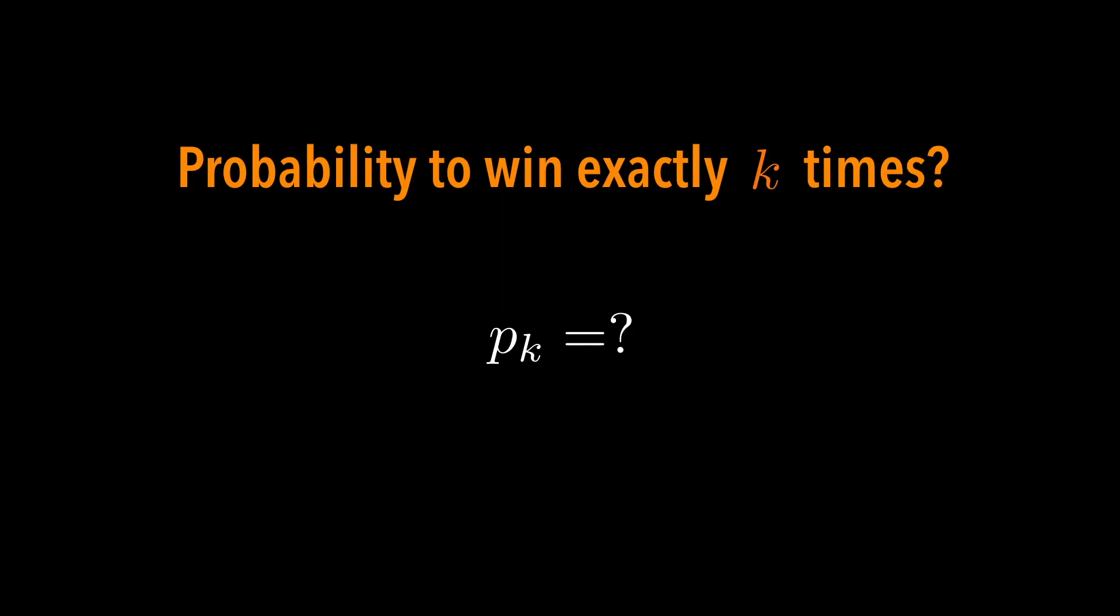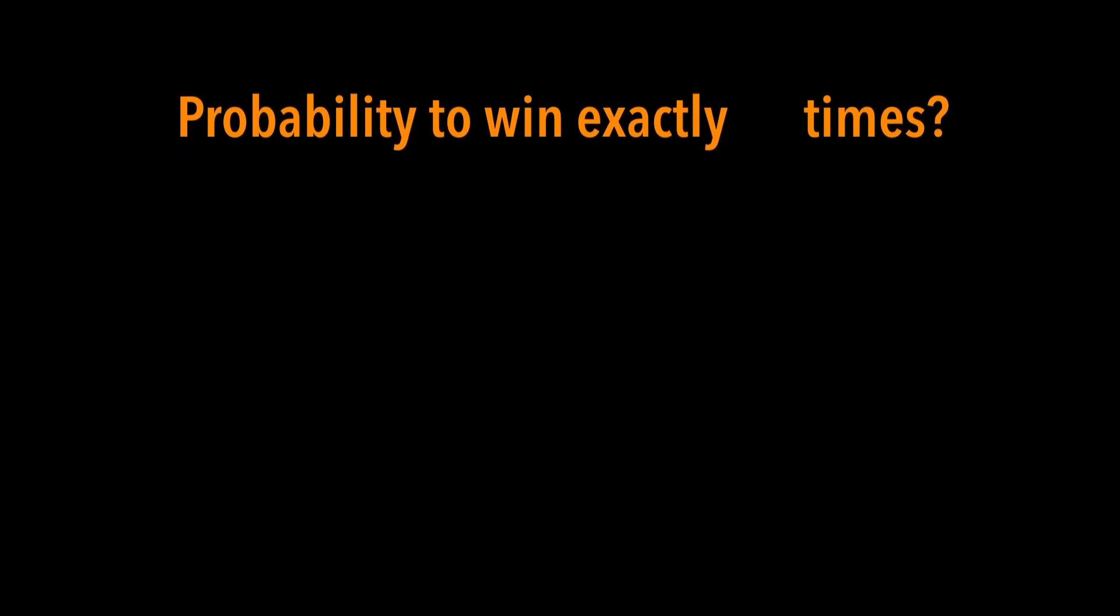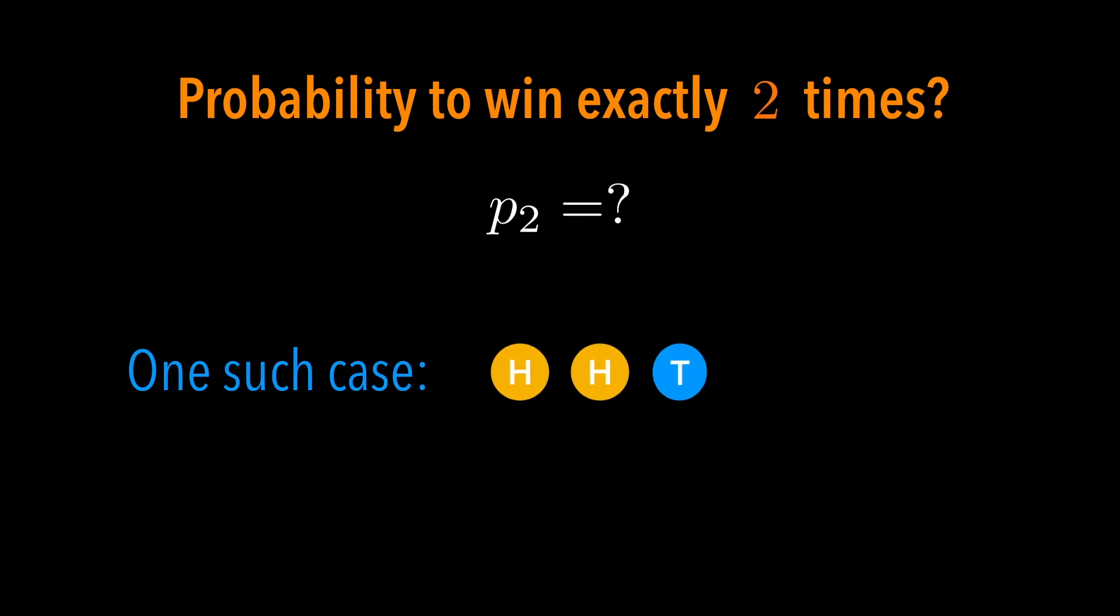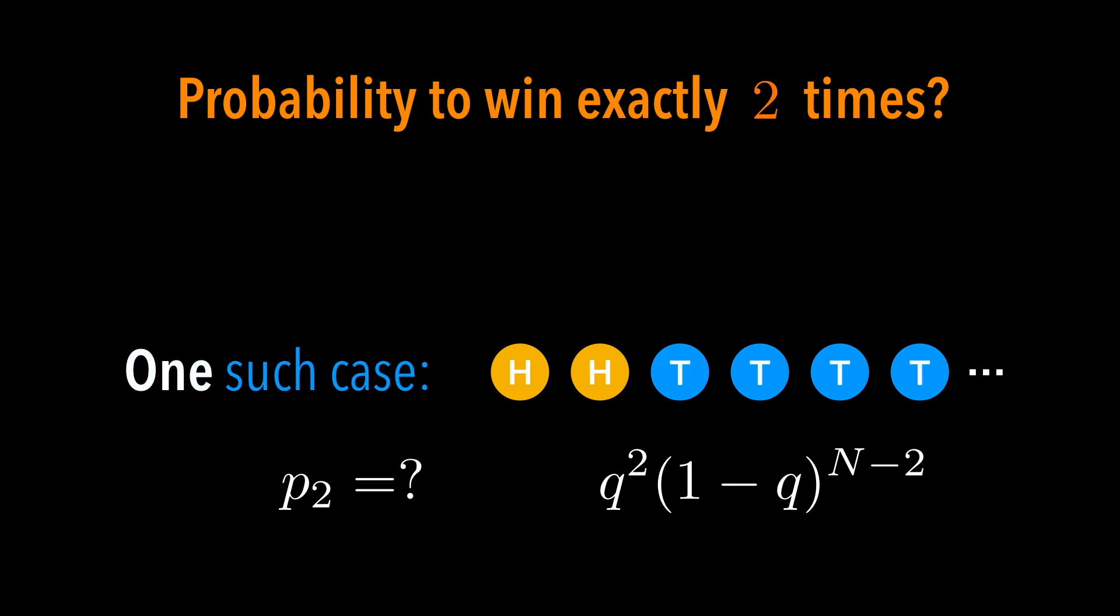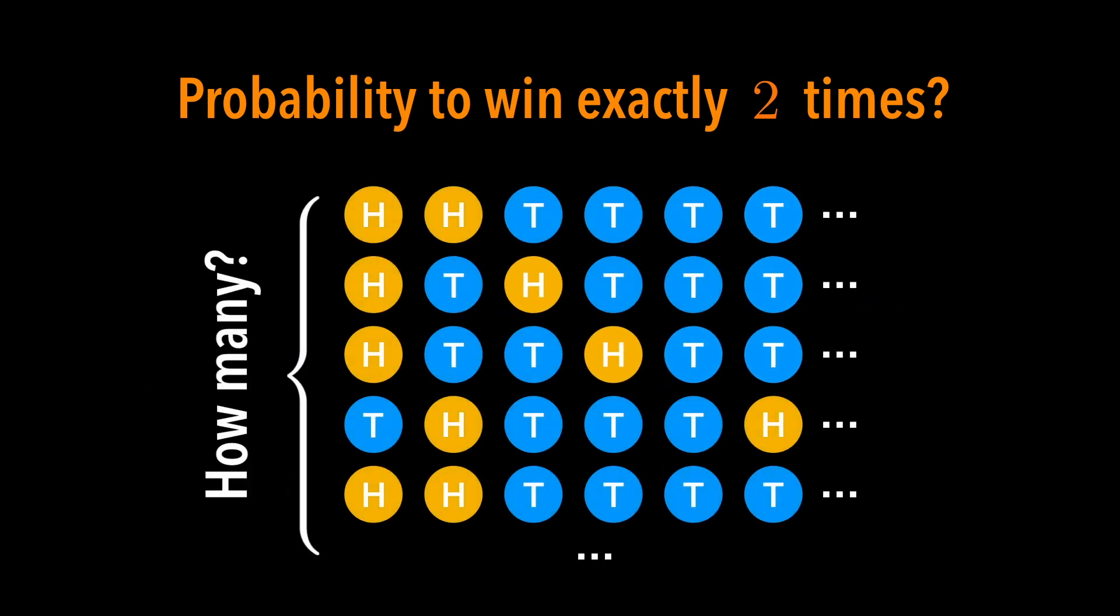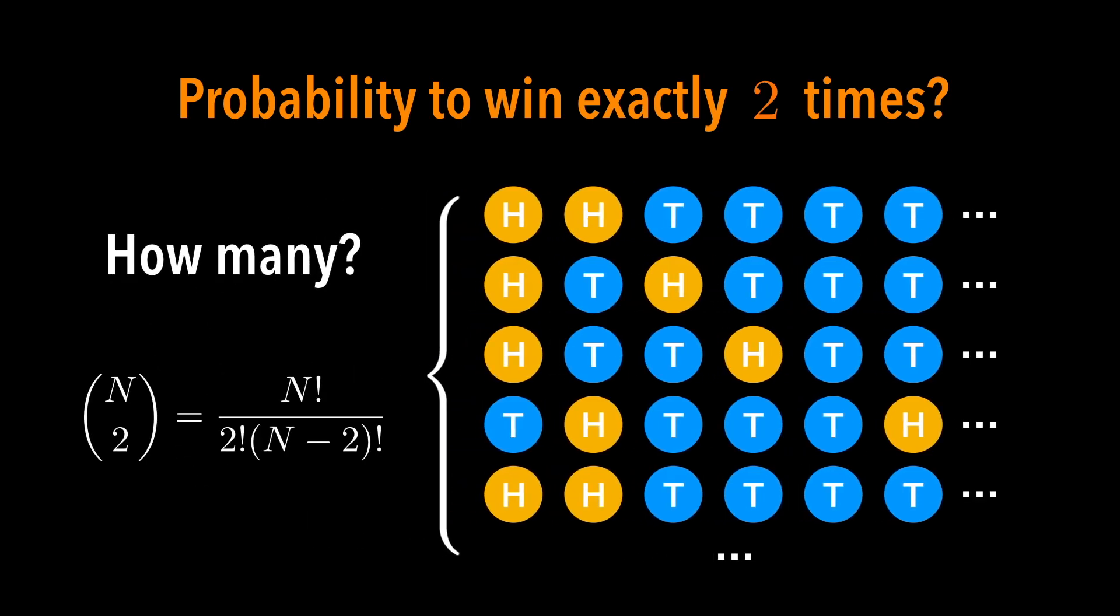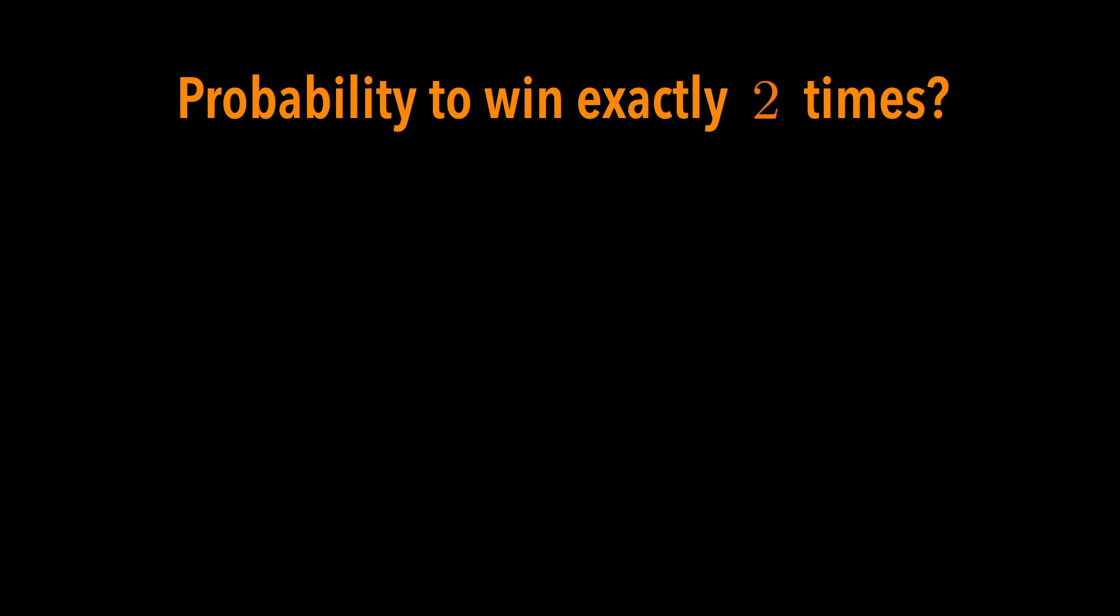Then what would be the probability of winning exactly k times? Let's say if you had only two successes at the beginning and then every following coin toss was tails. Then the probability of having this exact event will look like this. This formula describes exactly one such sequence. For instance, what happens if you have heads at the end, not at the beginning? So we should add all kinds of different outcomes that have the same number of successes. So how many choices do we have for distributing k successes among N trials? The answer is N choose k. So by multiplying this N choose k term, we obtain the binomial distribution formula.